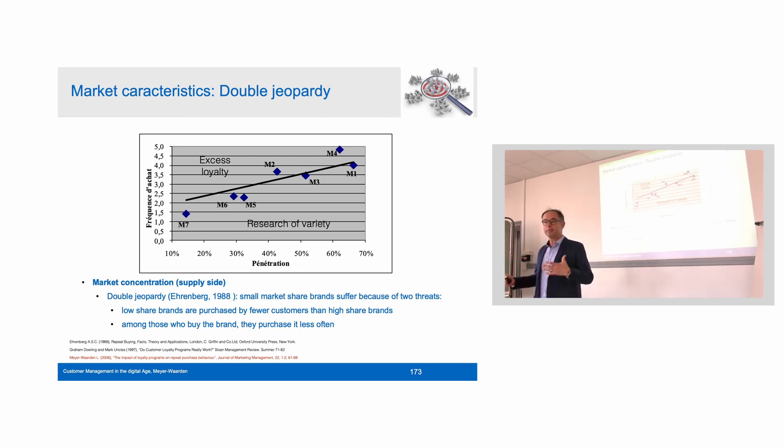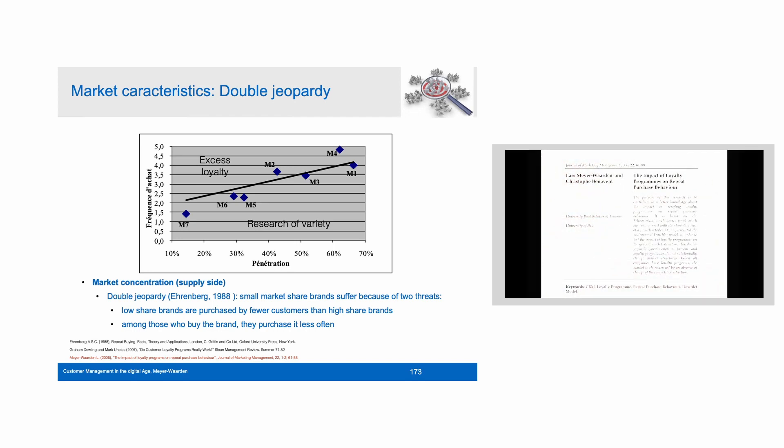So in summary, double jeopardy means that there are brands that are hit twice. They have a first disadvantage, because they have less buyers, so less penetration. And these buyers buy less often or frequently, so they are less loyal. And actually, they can be hit three times, because their marketing operations are also less efficient. So the only solution is to create niche positions to come out of the competitive situation.